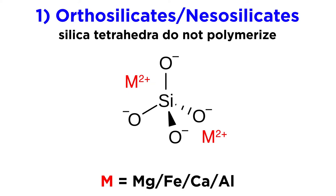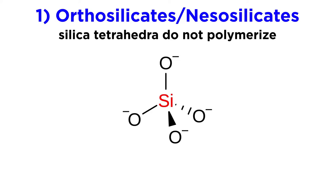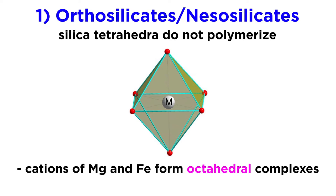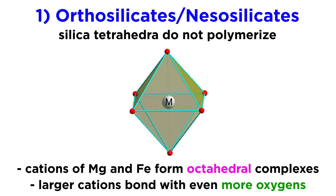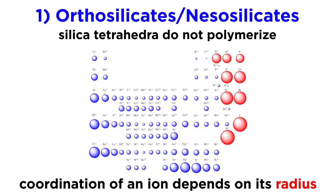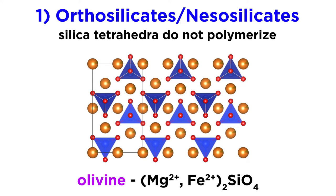Unlike silicon, which bonds to four oxygen anions to form tetrahedra, larger cations like magnesium and iron bond or coordinate with six oxygen anions to form octahedra. Moreover, even larger cations like the alkali metals and calcium coordinate with eight or more oxygen atoms depending on the mineral structure. Knowing that the coordination of an ion is dependent on its radius, it is easy to predict which atoms can substitute for others in a crystal's lattice. This brings us to the most common type of orthosilicate minerals: olivine.